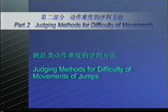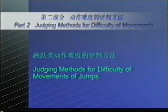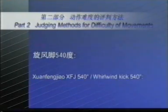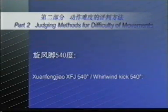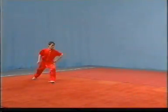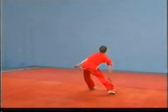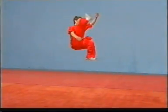Nudging methods for difficulty of movements of jumps. X-F-G, 540 degree, or Whirlwind Kick 540 degree. If twist is less than 540 degree, or the kick leg is below the horizontal level, no points shall be awarded.